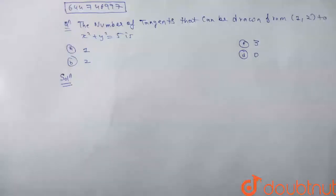Hello everyone, in this question we have to find the number of tangents that can be drawn from the point (1, 2) to the given circle x² + y² = 5. Let us solve this question.